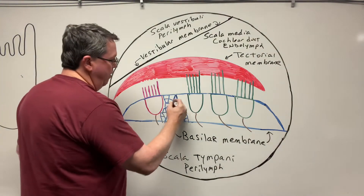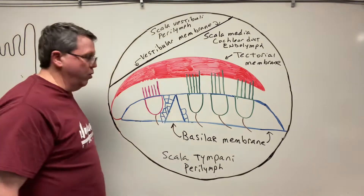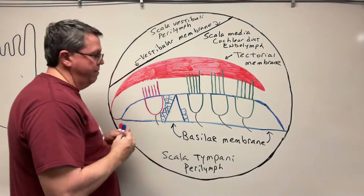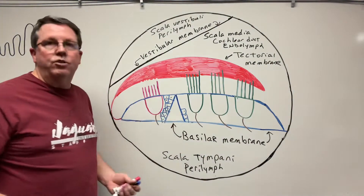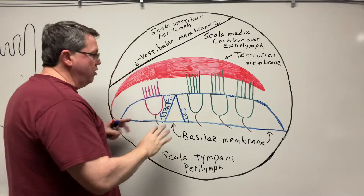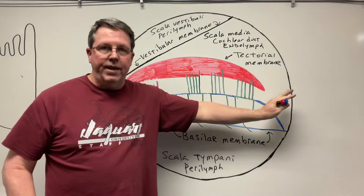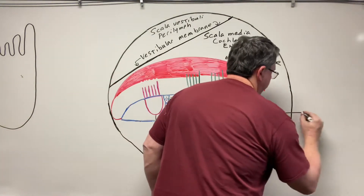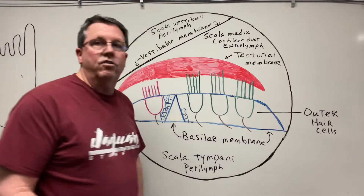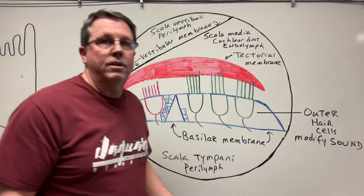This structure right here — these blue lines — are going to be called the pillars of Corti, and the center part is known as the tunnel of Corti. If you notice we have these squares here, which would have nuclei in them — those are going to be supporting cells, also called Deiters cells. On this side of the tunnel of Corti we have outer hair cells, going towards the outside of the head. The outer hair cells are going to modify sound — we'll talk more about what they do in a few minutes.